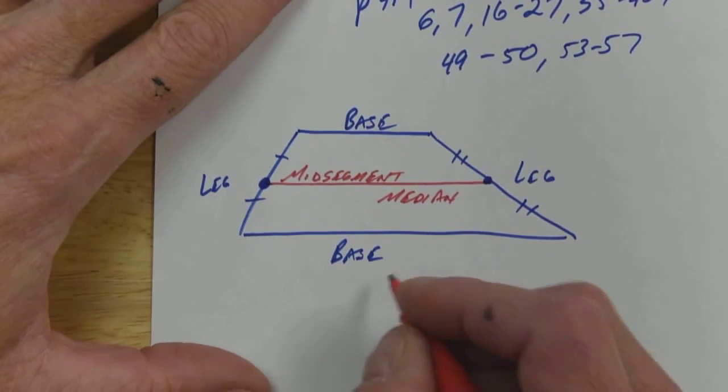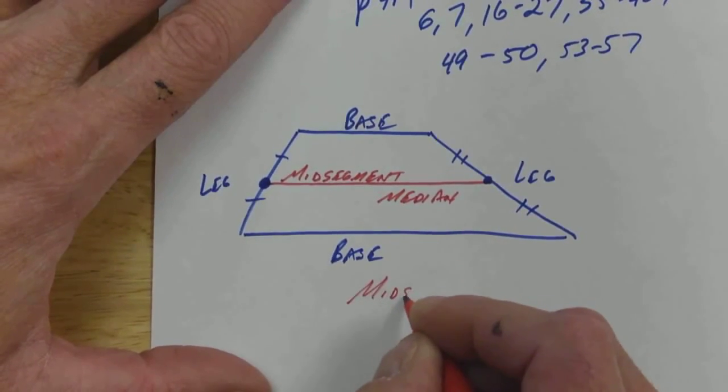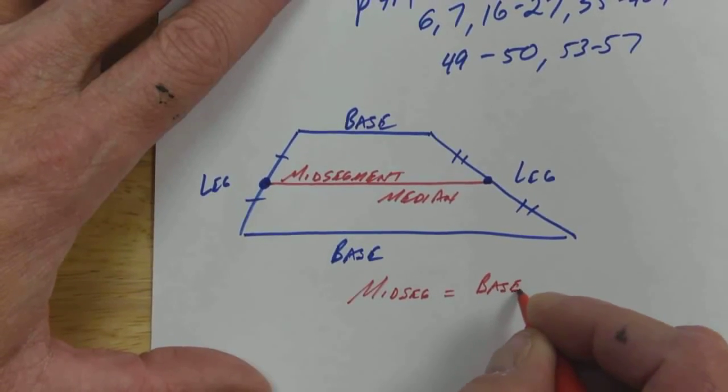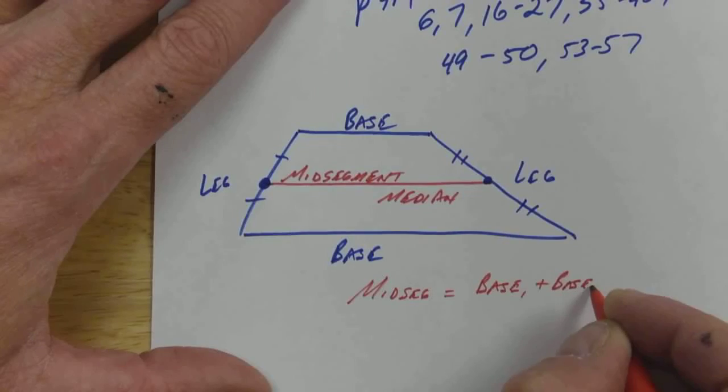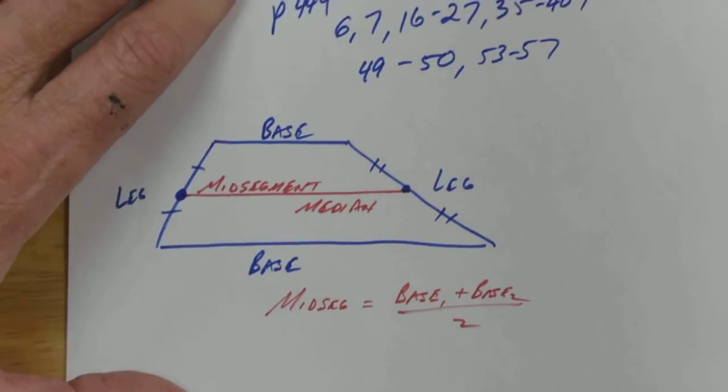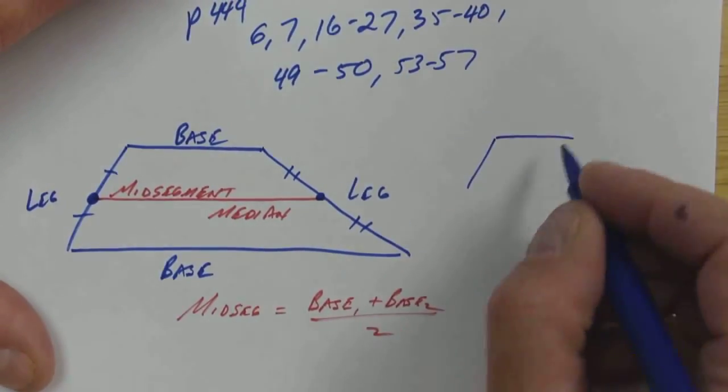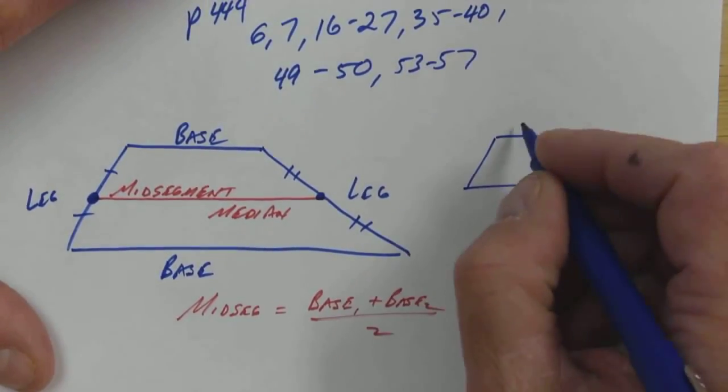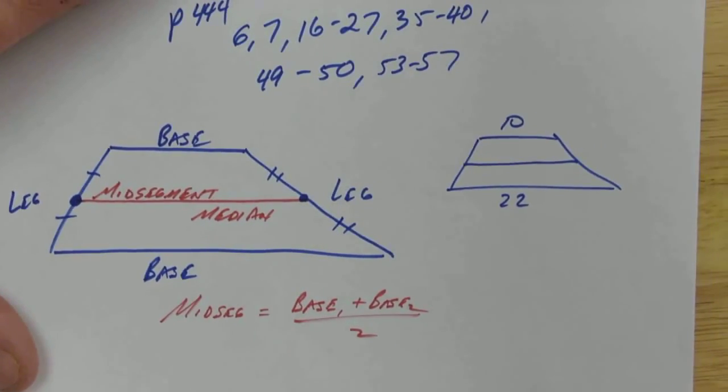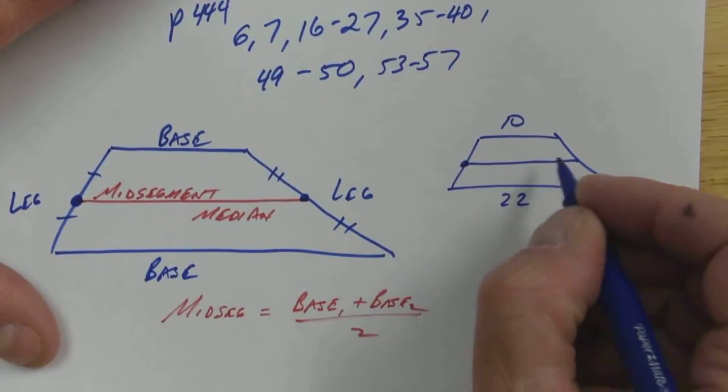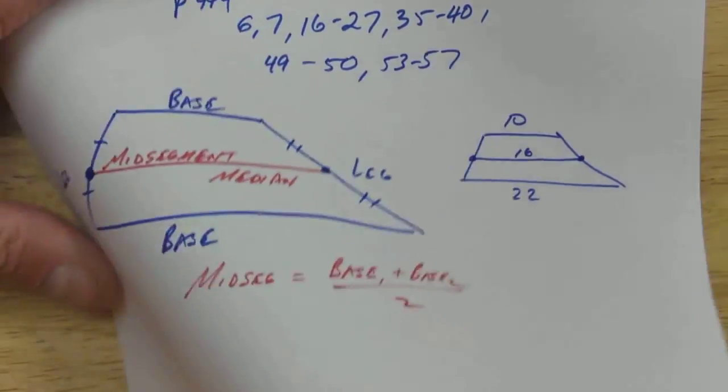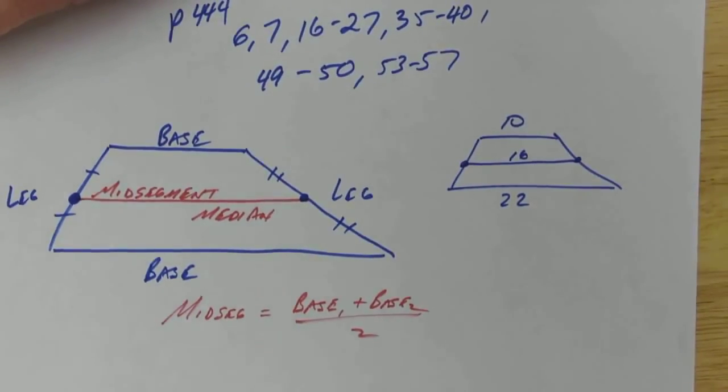If I would do an example here real quick - 10, 22 - what's my midsegment going to be? 16. The average of 10 and 22 is 16. 10 plus 22 equals 32 divided by 2 gives me 16.